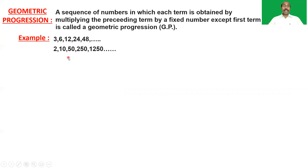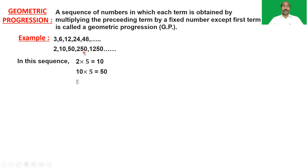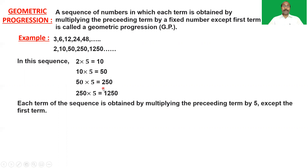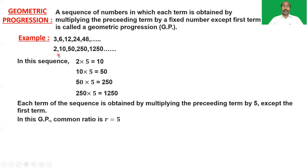One more example: 2, 10, 50, 250, 1250, and so on. In this sequence, 2 into 5 is 10, 10 into 5 is 50, 50 into 5 is 250, and 250 into 5 is 1250. Each term is obtained by multiplying the preceding term by 5 except the first term. So these terms are also in geometric progression with common ratio r equal to 5 and first term a equal to 2.